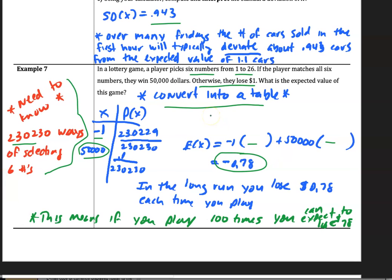This means that this lottery is a loser, meaning that in the long run, you lose 78 cents each time you play, because you might win once, and you might win the 50,000, but in general, you're going to lose this often. This is a very simplistic way of thinking about it.